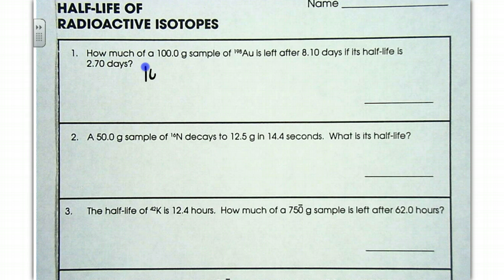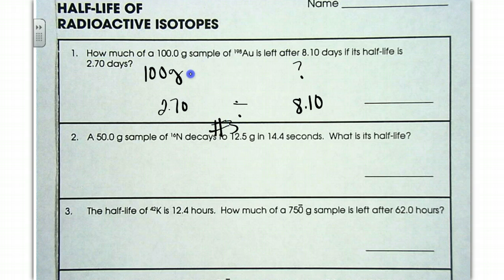So a couple more examples. Here we would do 100 grams. What is the final amount left over if the half-life is 2.70 days, the total time is 8.10 days? And so I will take my 8.10 divided by 2.70, and that's going to get me three half-lives that occur. So this will cut in half three times. One, two, three. This would become 50, this would become 25, and my final answer would be 12.5 grams.